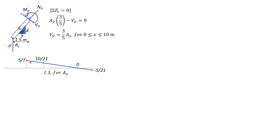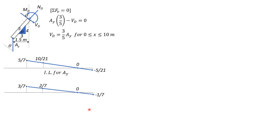So all you have to do is construct the influence line for shear at D by multiplying these coordinates by 3/5. So 3/5 of 5 over 7 is 3 over 7. 3/5 of 10 over 21 is 2 over 7. 3/5 of 0 is 0. And 3/5 of negative 5 over 21 is negative 1 over 7. So plotting, that's the influence line for shear at D.